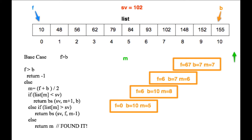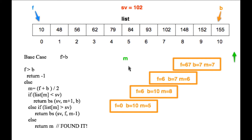We have an array — it could be an array list, doesn't matter. Notice that it's sorted. We have index positions, a variable f for front containing the index of the front of the list, represented by a blue arrow. We have a variable b containing the index of the back of the list shown by an orange arrow, and sv is our search value. The name of the list is 'list', and we have a variable m which we'll talk about in a minute.